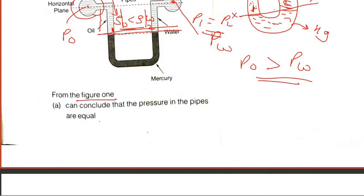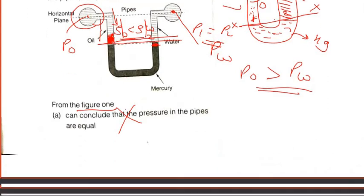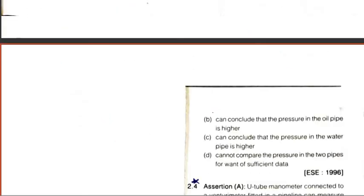That is the concept. From the figure we can conclude that the pressure in the pipes are equal - definitely not. If pressure in the pipes were equal, then this water level and the oil level will become like this. Can conclude that the pressure in the oil pipe is higher - yes. This is correct. So B is the right answer.